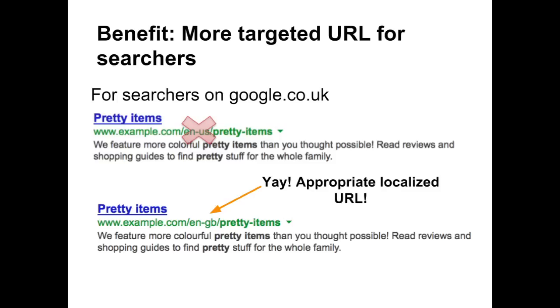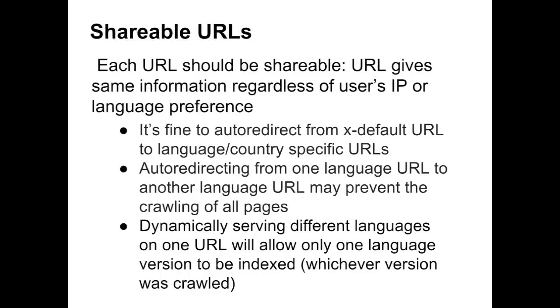The final portion of this video deals with best practices when expanding your site. The first best practice is to strive to create shareable URLs in your site architecture, meaning each URL consistently serves similar information in the same language regardless of the user's IP or language preference. This greatly assists search engine indexing, and ensures that if a user bookmarks your page or promotes your site on their blog, their audience — whether in the US or Germany — will see the content that was intended. When it comes to auto redirecting users, while that can be done from an x-default URL to a language-specific URL, we discourage auto redirecting based on IP from one language URL to a different language URL, as this could prevent all language versions from being crawled.